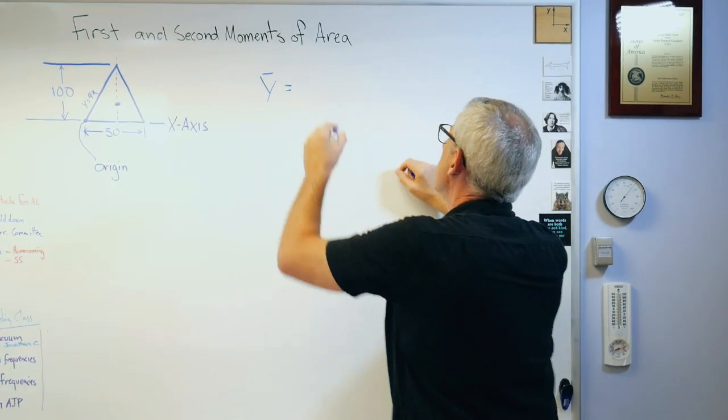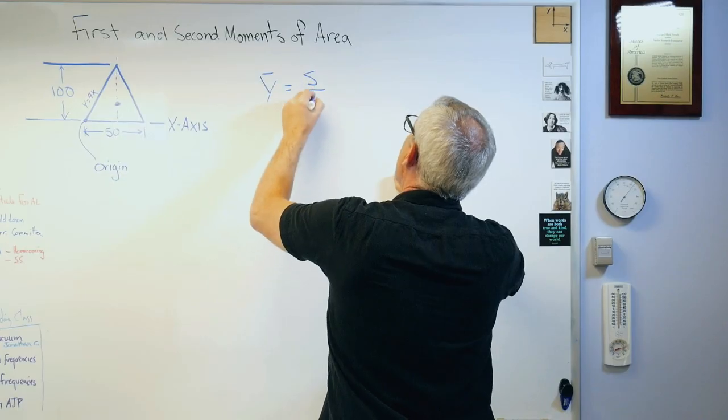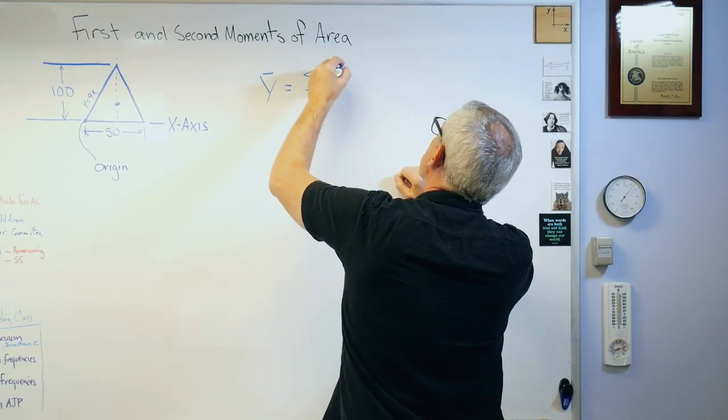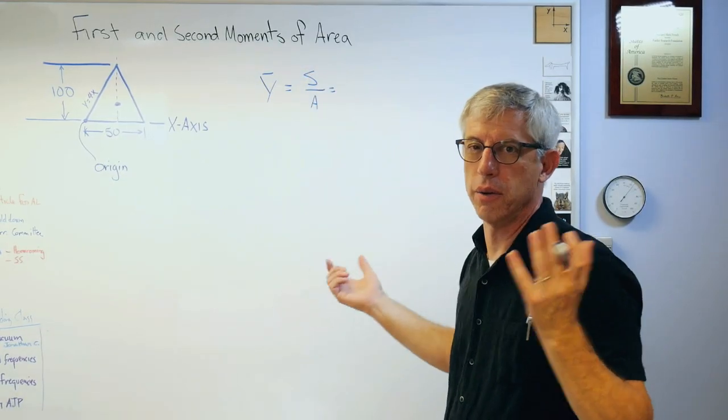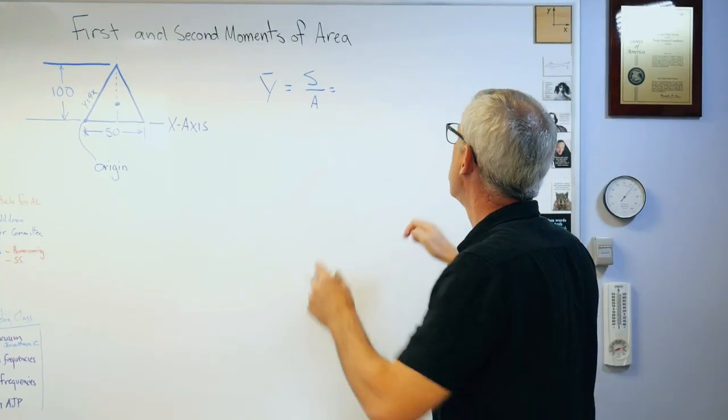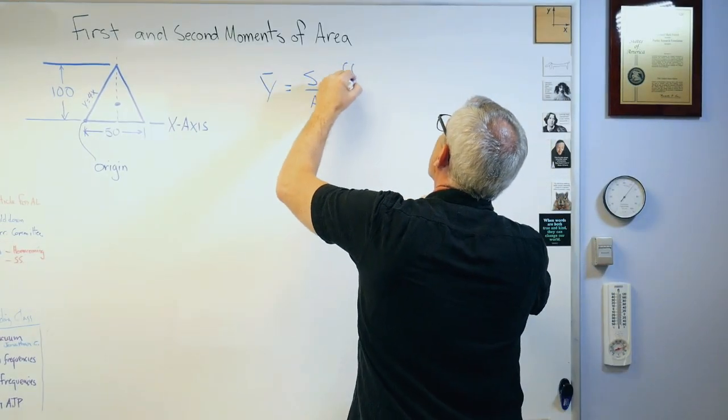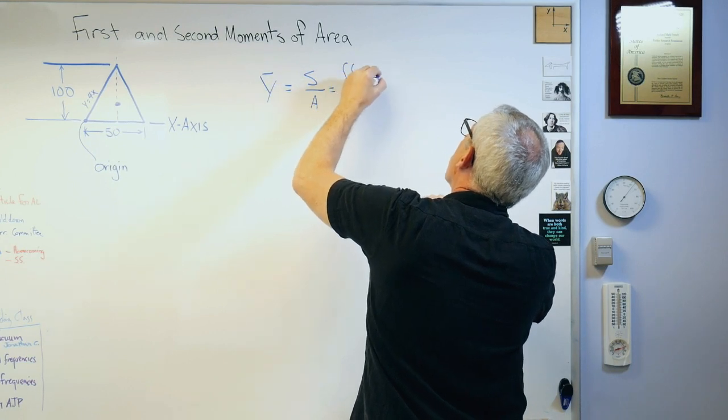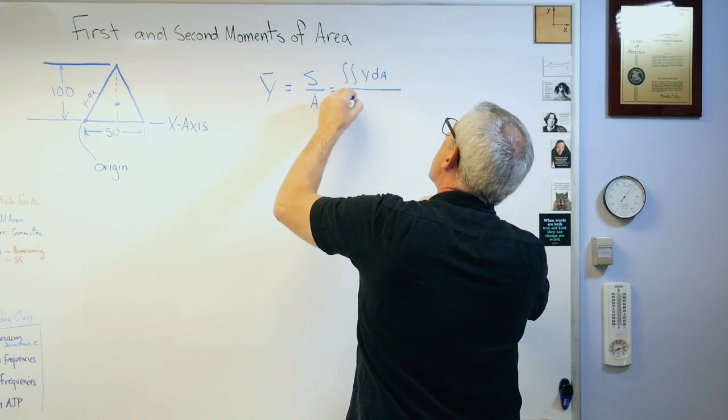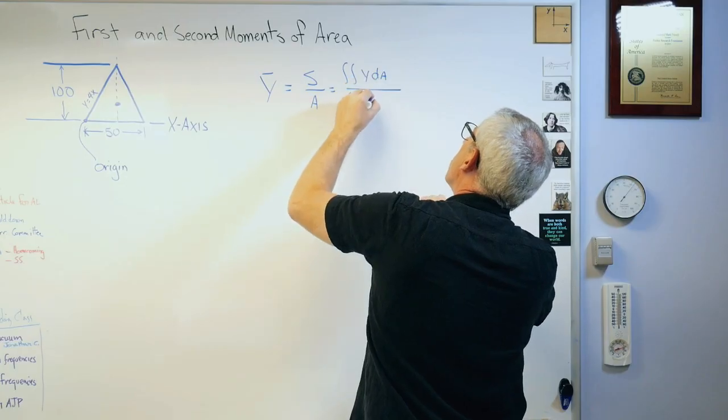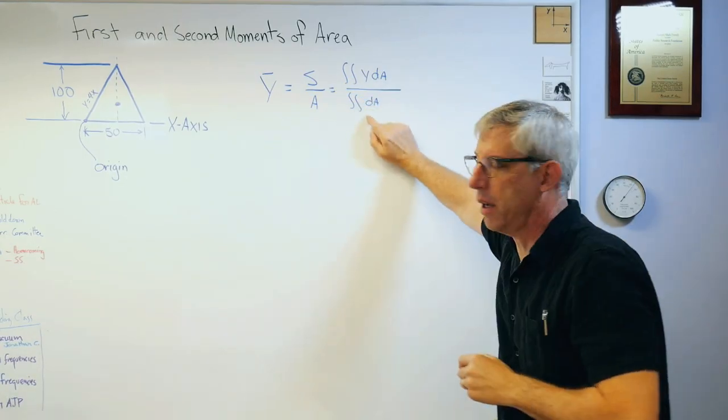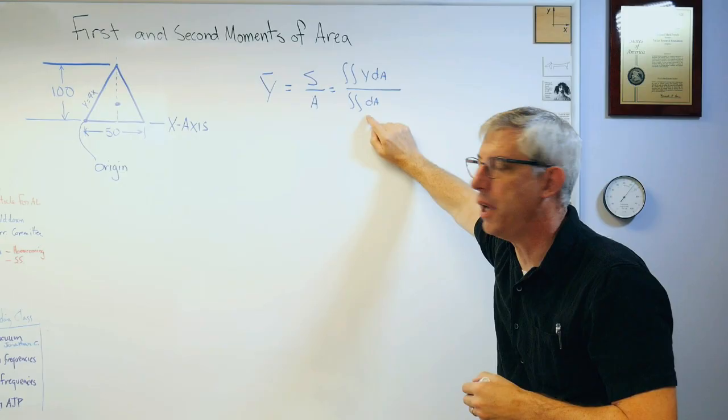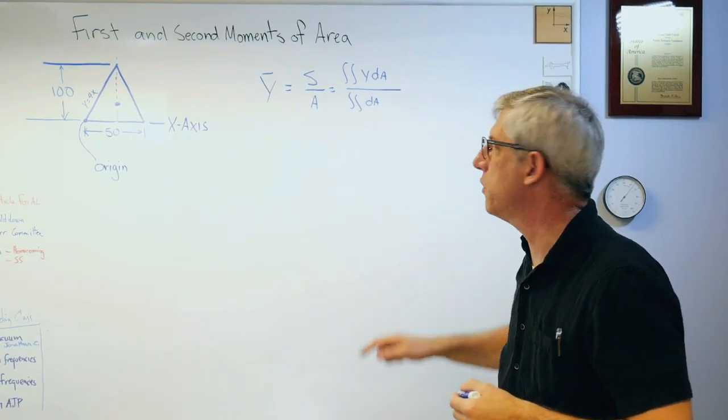This is s over a. S is called the first moment of area. I'm going to put that double integral there just to remind you that really is area. That's a first moment of area, and that's area. That's how a mathematician figures out the area of a shape, double integral across the area.